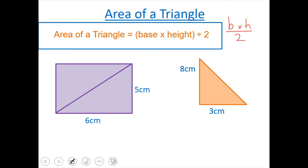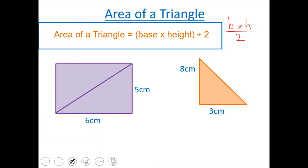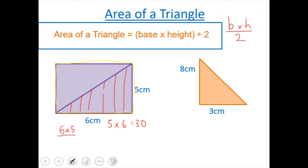For example, if I look at this shape here — if I highlight the rectangle — the area of that rectangle is going to be 5 times 6, which equals 30. Now if I work out the area of this triangle, we know it's going to be half of the rectangle, so base times height divided by 2: 6 times 5 is 30, divided by 2, and that's going to be 15